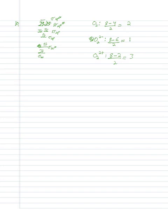It depends on what the diagram gives you. If it starts at the 2s, use valence electrons only. If it starts at the 1s, use all the electrons. The sheet provided on the exam starts at the 2s, so you can use valence only.